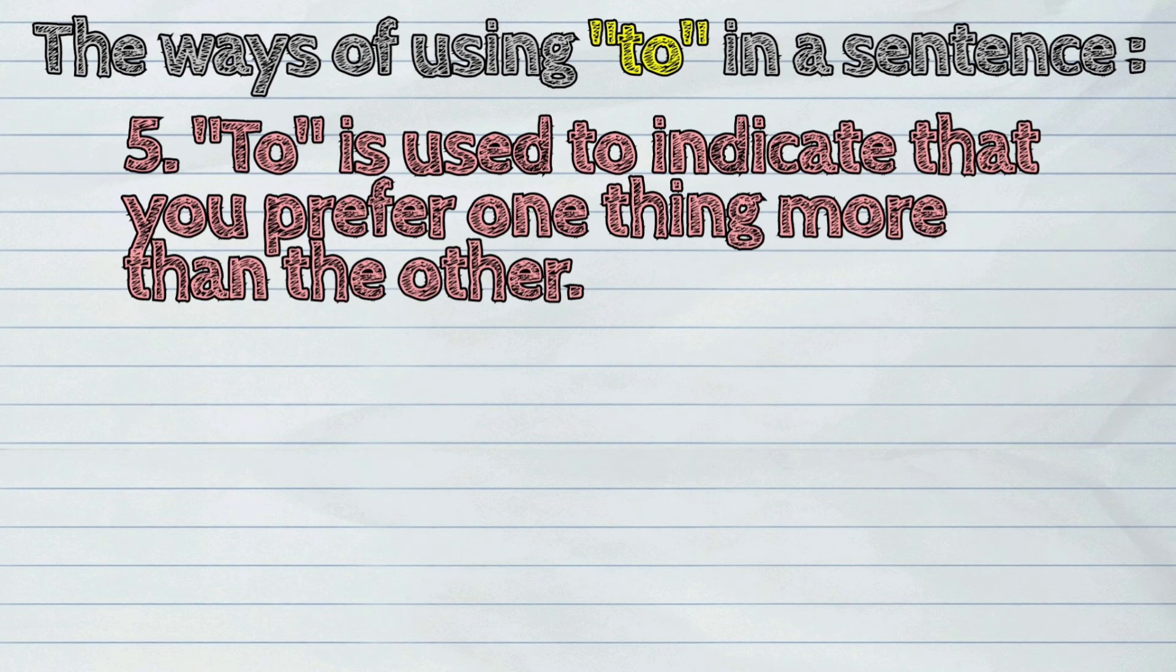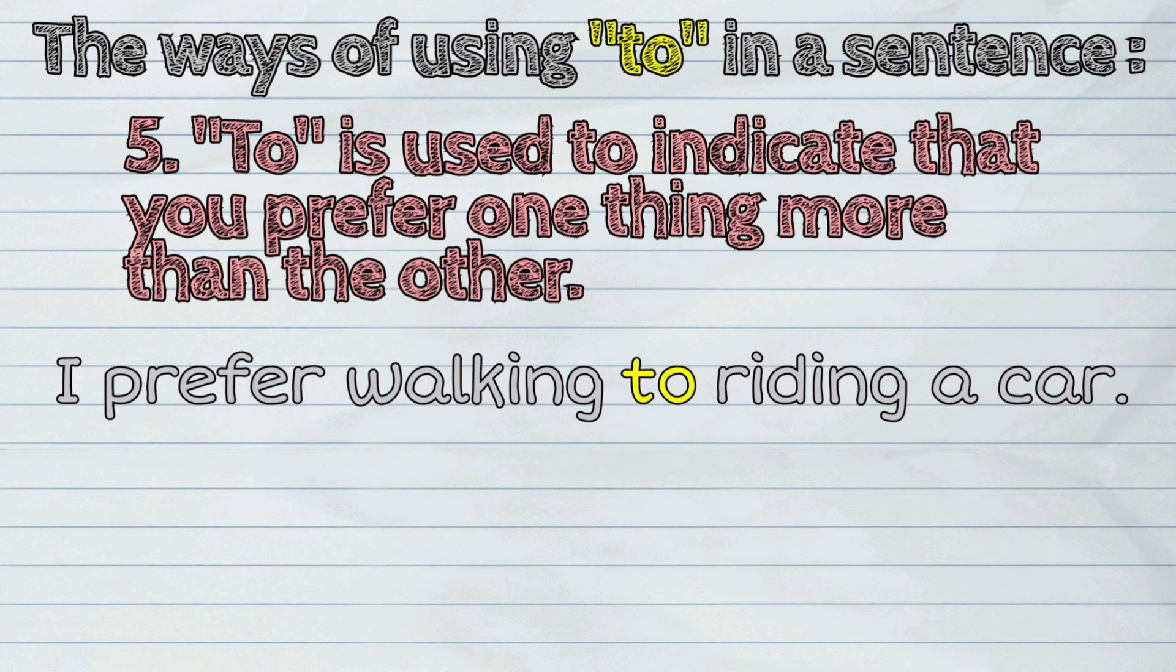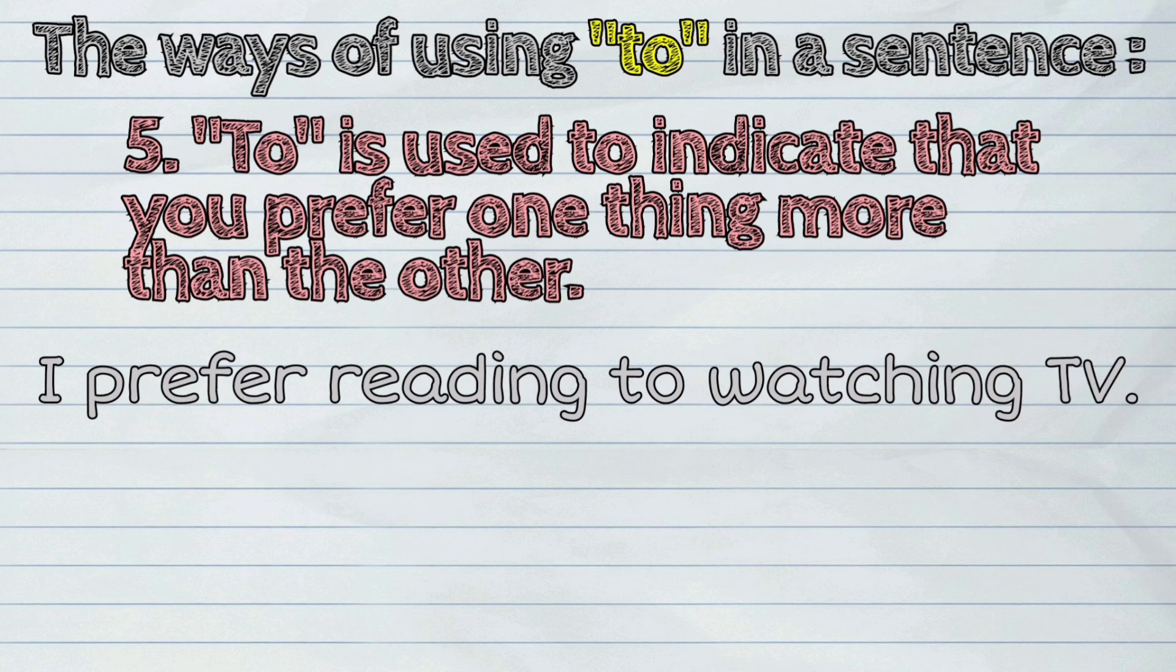Fifth, 'to' is used to indicate that you prefer one thing more than the other. Examples: I prefer walking to riding a car. I prefer reading to watching TV.